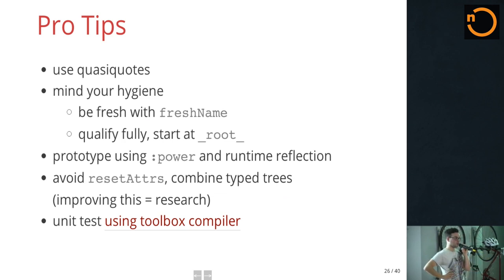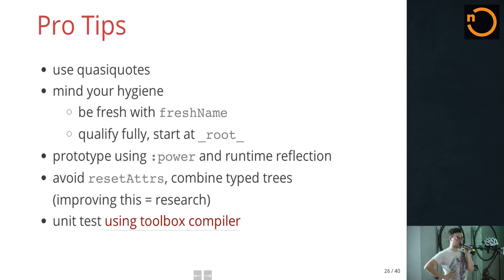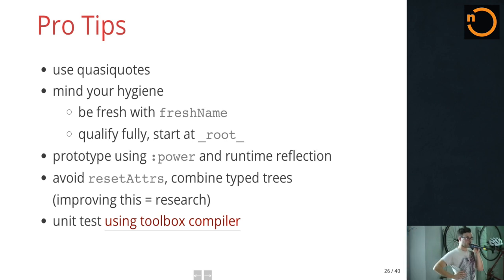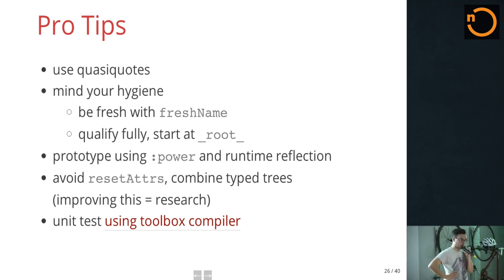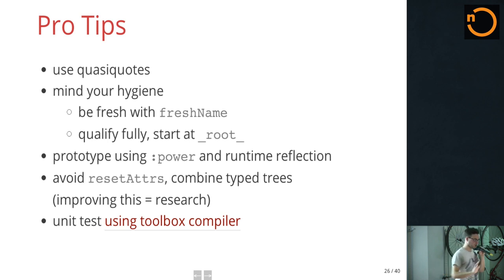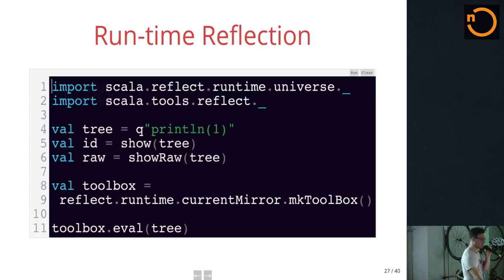When you're implementing macros: use quasi-quotes. Use quasi-quotes. They're great. Be hygienic. Use fresh names. Use fully qualified names starting at underscore root underscore — otherwise you might capture things. Even 'Scala' isn't as unique as you might think. In the REPL there's a great power mode that lets you experiment with runtime reflection. There's a toolbox compiler you can use to do unit testing of your macros. And avoid reset-attrs, which is something that undoes type checking — resets your whole program as if it had just been parsed. Instead, combine type trees.